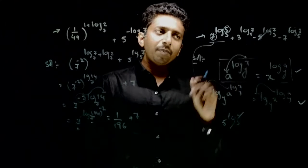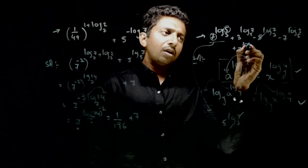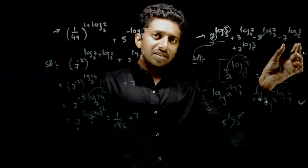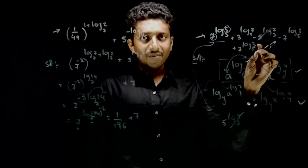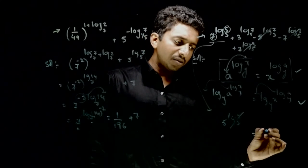Iske baad yehaa habe apply karenga. So 3 power log 7 to the base 5 kya ho jae ga? 7 power log 3 to the base 5 ho jae ga. So this is also 7 power log 3 to the base 5 minus n. So this and this is also getting cancelled. So apna answer hoga 0.